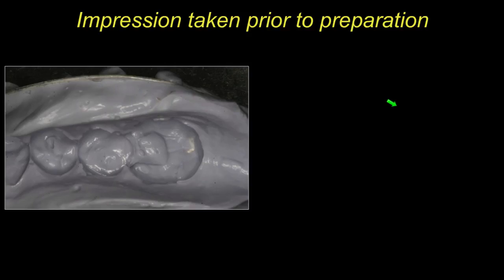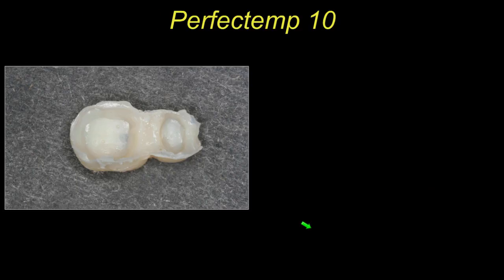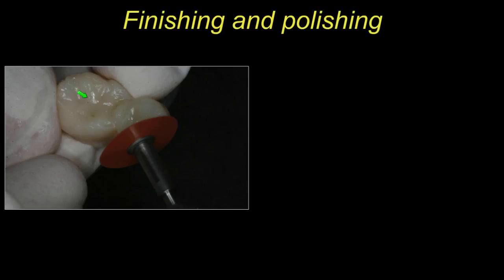Now we'll go into the clinical cases. Here's an example using an alginate substitute — I think it's called Alginx, but there are a variety available. This picture shows the provisional material just being removed after seating in the mouth. You get some flash around the edges, then we take it out after it's set and trim the edges all around. Once it's out, I'll polish it up using different types of polishers.